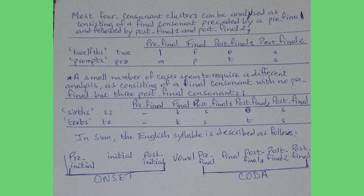A small number of cases seem to require a different analysis, consisting of a final consonant with no pre-final but three post-final consonants. Examples: 'sixths' — final /k/, post-final one /s/, post-final two /θ/, post-final three /s/. In 'texts' — final /k/, post-final one /k/, post-final two /t/, post-final three /s/.